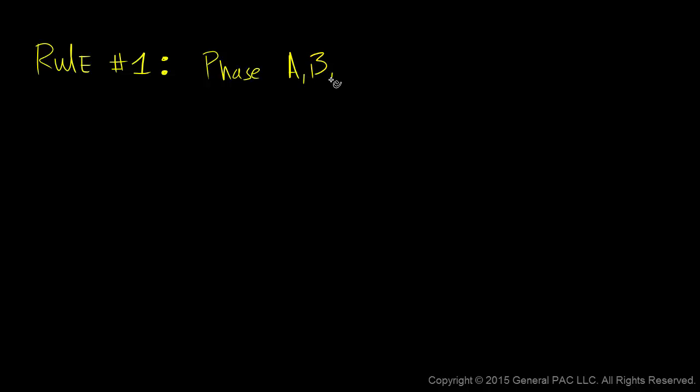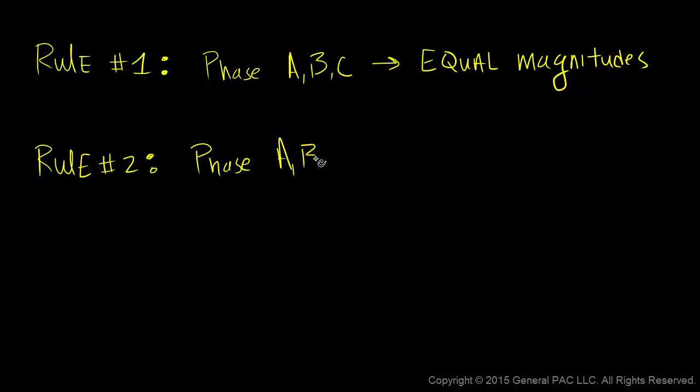The three rules for balanced systems are: Rule number one. Phase A, B, and C voltages or currents must have equal magnitudes. Rule number two. Phase A, B, and C voltages or currents must have 120 degrees phase displacement between each other.